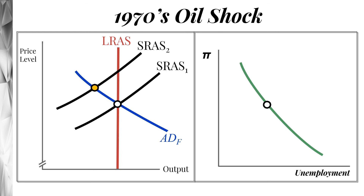Where would this be on our Phillips curve graph? We see both higher inflation and high unemployment. That combination just doesn't jive well with the original vision of the Phillips curve. We have to be somewhere along the curve — the curve is our menu, it's our options, and we're going to be at one of those places. When we have this oil shock, we get high inflation and high unemployment. We're not on the Phillips curve.